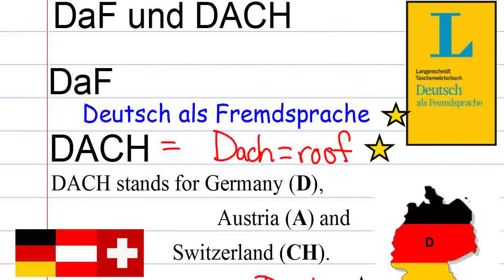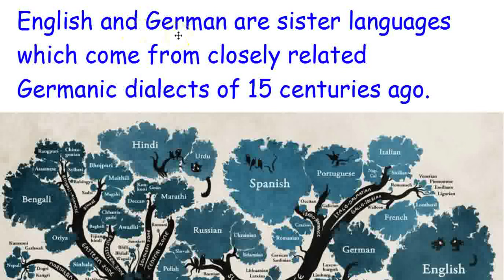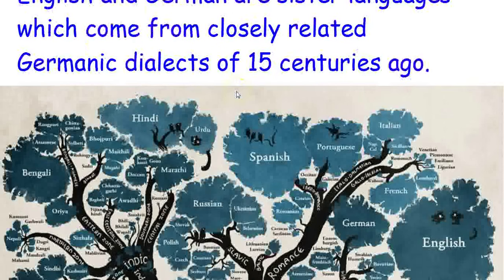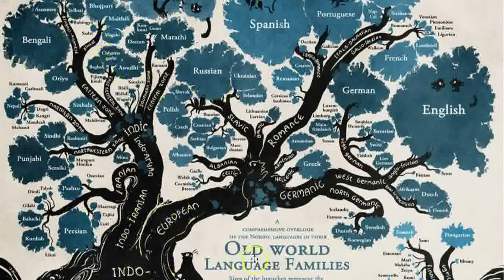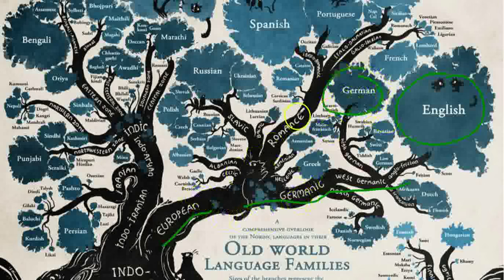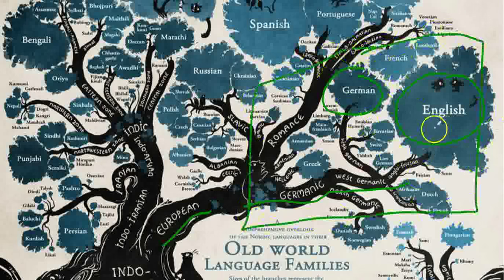The 'CH' for Switzerland comes from its Latin name, which is why it's abbreviated that way. When you're looking at studying German, it's worth noting that English is predominantly Germanic. Looking at a language family tree, we can see Europe's Germanic branch, and both English and modern German sit on that branch — which means there are going to be some major similarities between the two languages.